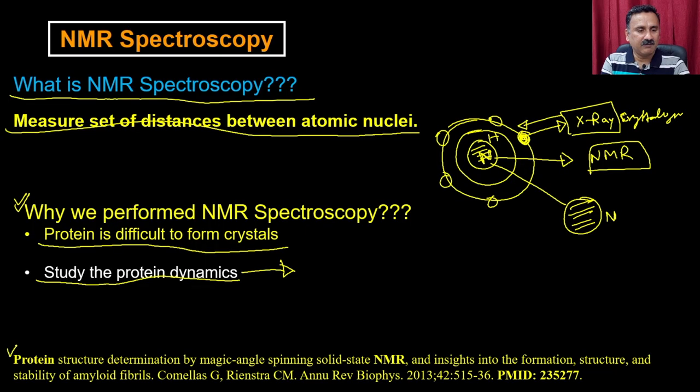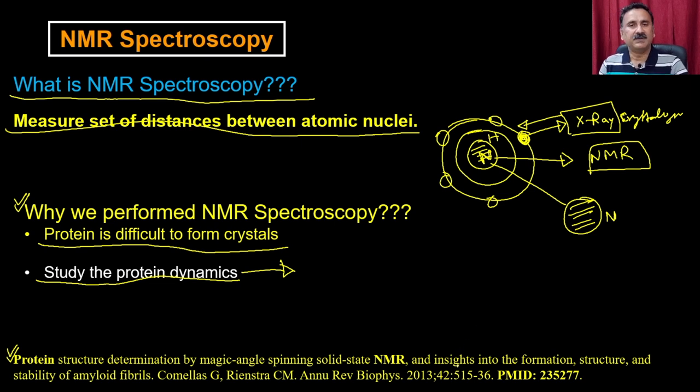Compared to X-ray crystallography where the structures are going to be rigid or they will stick to each other and are not allowed to move, NMR is going to be done in solution, and the proteins are free to move — that is how you can be able to study the dynamics. For example, if you add the substrate to the protein, it is going to change the conformations, and those conformations can be mapped with the help of NMR spectroscopy. I have given you a reference for the protein NMR spectroscopy as well.